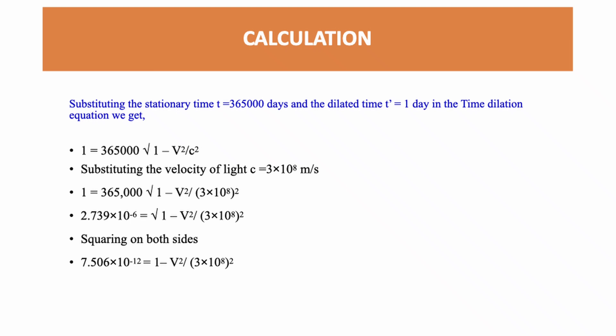1 = 365,000√(1 - V²/(3×10⁸)²). Dividing 1 by 365,000, we get 2.739×10⁻⁶ = √(1 - V²/(3×10⁸)²). Squaring on both sides to get rid of the square root,